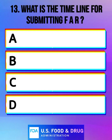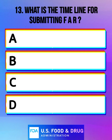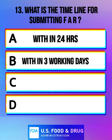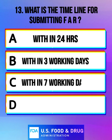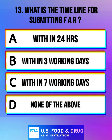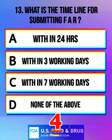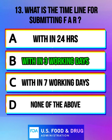What is the timeline for submitting a FAR (Field Alert Report)? Option A: within 24 hours. Option B: within 3 working days. Option C: within 7 working days. Option D: none of the above. And the correct answer is within 3 working days.